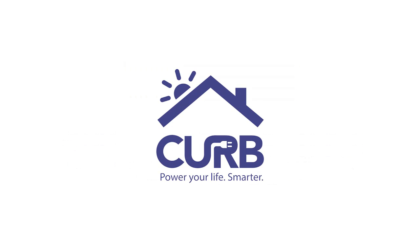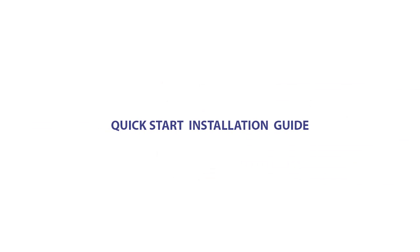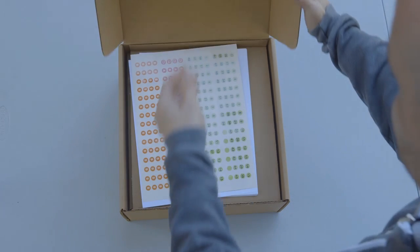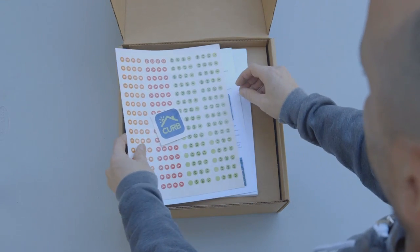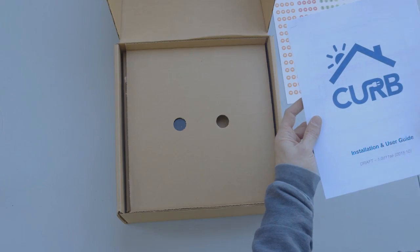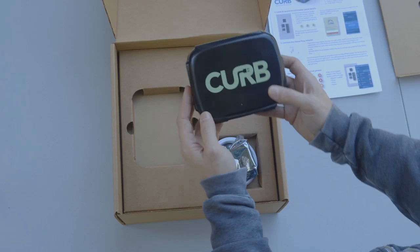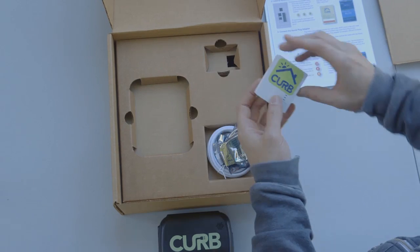Welcome to the Curb Quick Start Installation Guide. Let's get started. First, we need to check the package contents. Make sure there is one sticker sheet, one quick start guide, one installation guide, one Curb power hub, and one home plug network adapter.